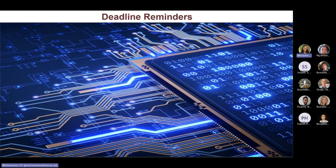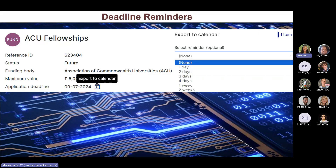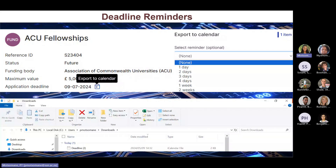First, we'll take a look at the deadline finder. When your search for funding has yielded some results and you want to set up a deadline reminder for a funding call you're interested in, you can click on the calendar icon to select the frequency of a reminder. This will export an ICS file to your downloads folder. When you double-click on the ICS file, it will link directly to your device's default calendar, either MS Outlook or Google. You can also right-click on the ICS file to choose which program you want to open it with.